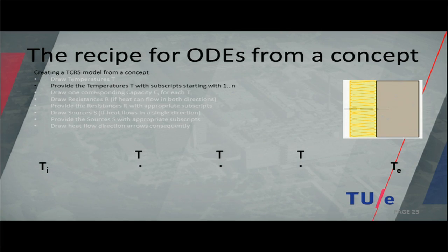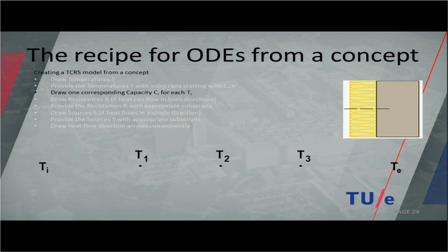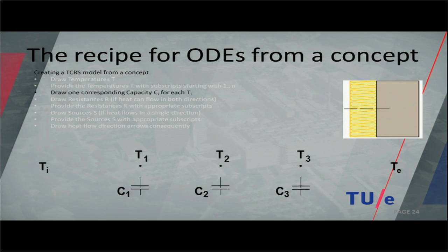The second step is to provide all temperatures a specific number, starting with one. So we have T1, T2, and T3. Then we provide capacity: for each temperature, you have exactly one capacity. So you connect capacities C1, C2, and C3.